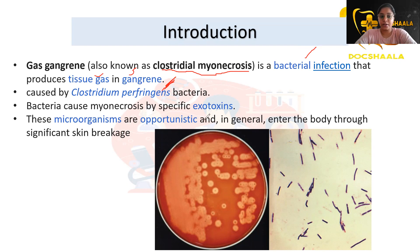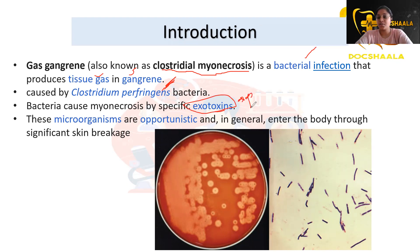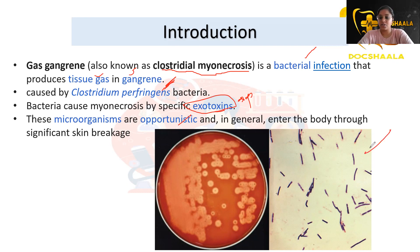It is caused by Clostridium bacteria, which cause myonecrosis by producing specific exotoxins. These microorganisms are opportunistic and in general enter the body through significant skin breakage. This is the clostridial myonecrosis organism present on the slide here.